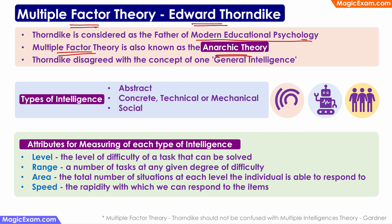In the multiple factor theory, Thorndike says that there are three types of intelligence: abstract, concrete, and social intelligence. Concrete intelligence can also be called technical or mechanical intelligence.